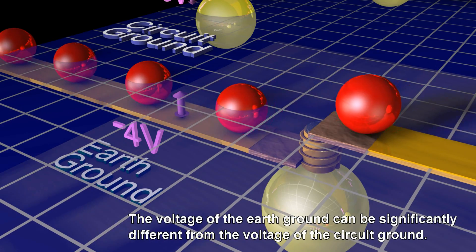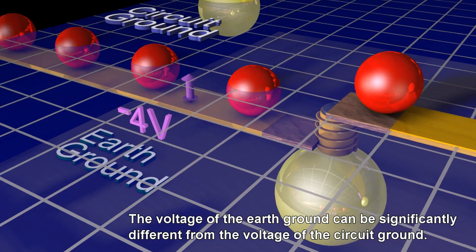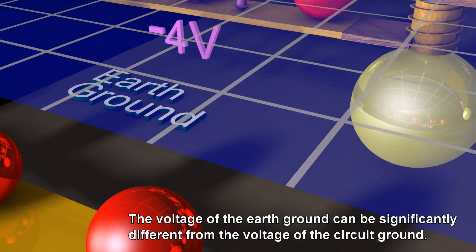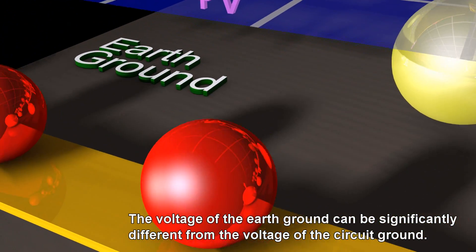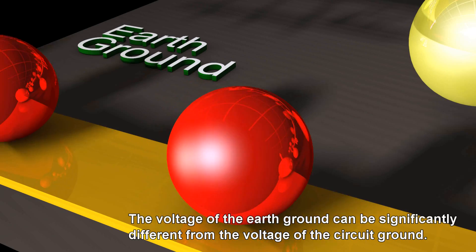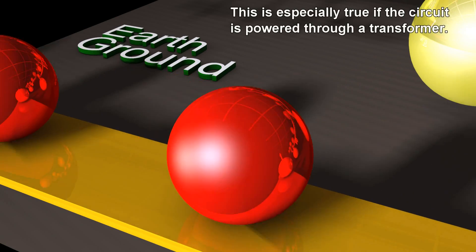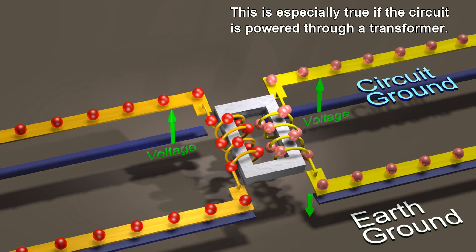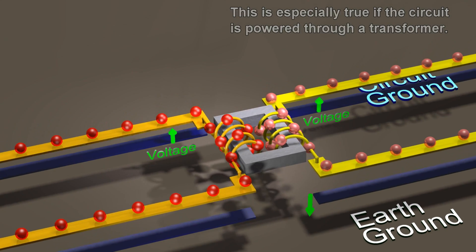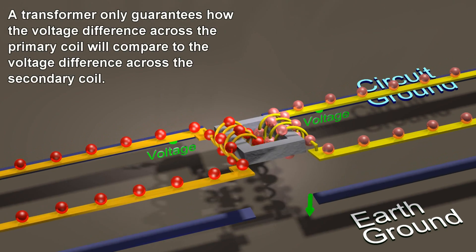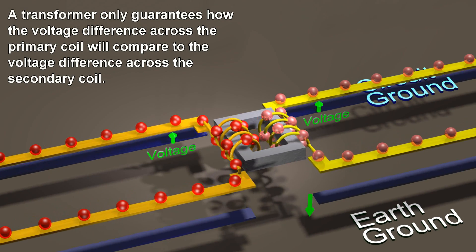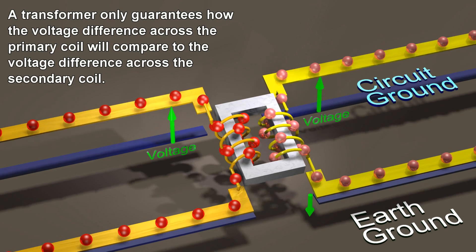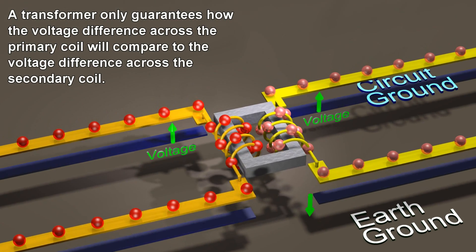The voltage of the earth ground can be significantly different from the voltage of the circuit ground. This is especially true if the circuit is powered through a transformer. A transformer only guarantees how the voltage difference across the primary coil will compare to the voltage difference across the secondary coil.